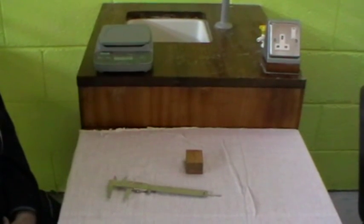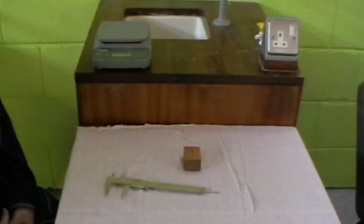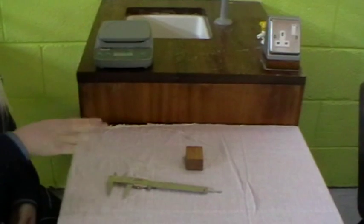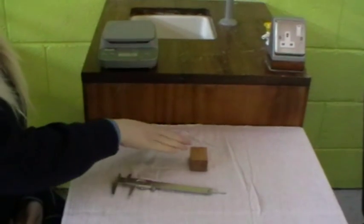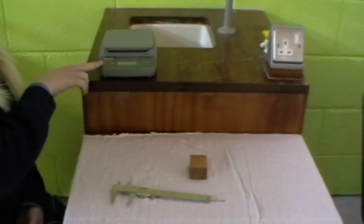Aim to find the density of a rectangular block. Apparatus needed: vernier calipers, rectangular block, and electronic balance.